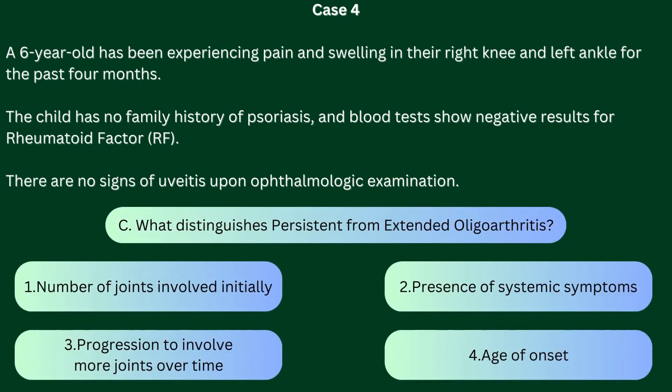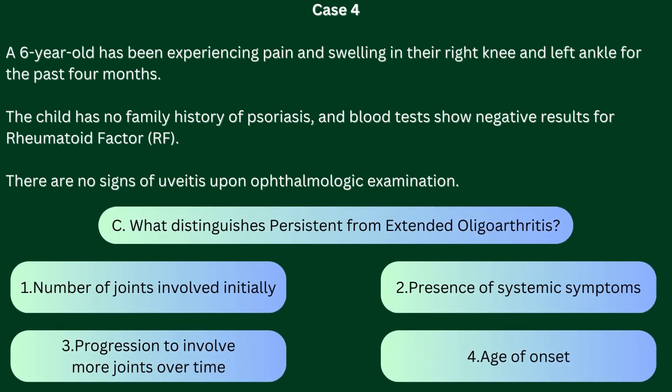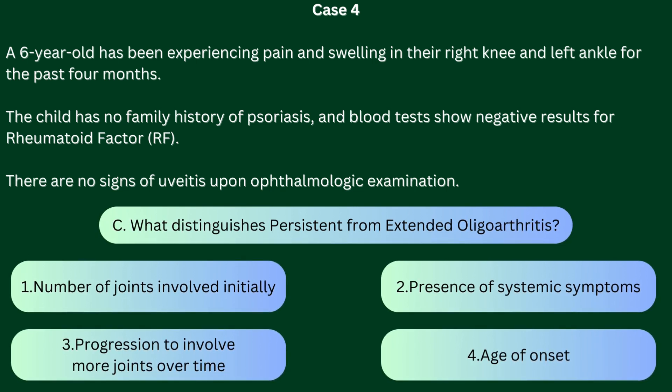Question C: What distinguishes persistent from extended oligoarthritis? 1. Number of joints involved initially, 2. Presence of systemic symptoms, 3. Progression to involve more joints over time, 4. Age of onset. The correct answer is 3. The primary difference lies in disease progression. In persistent oligoarthritis, the child continues to have 4 or fewer joints affected throughout the disease course. In contrast, extended oligoarthritis progresses to involve 5 or more joints after the initial 6 months.